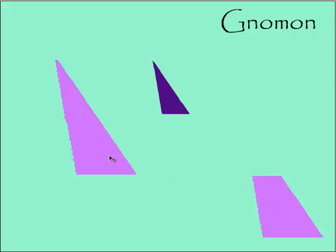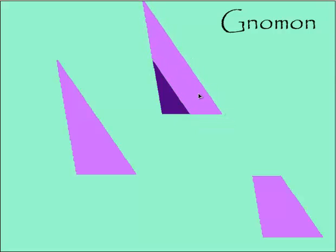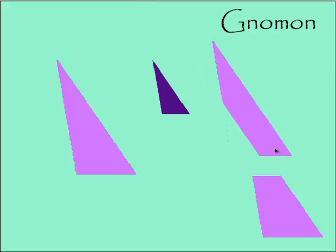Another shape that's gnomon to the little purple triangle is this one. If I add this quadrilateral to that side of the triangle, I get the same triangle that the small one is similar to. So there are two possible gnomons to this little purple triangle.